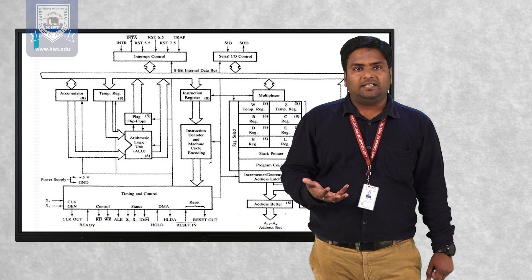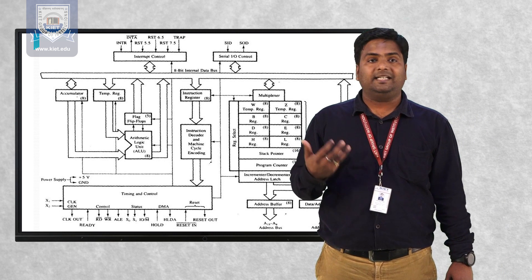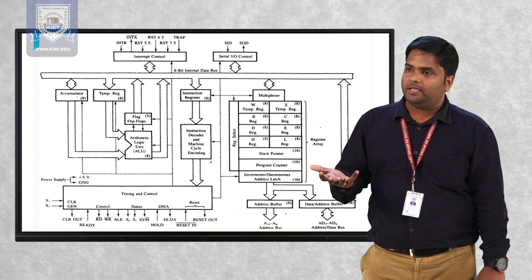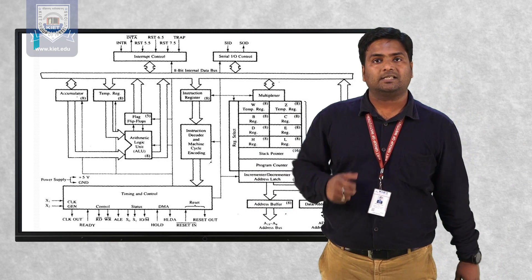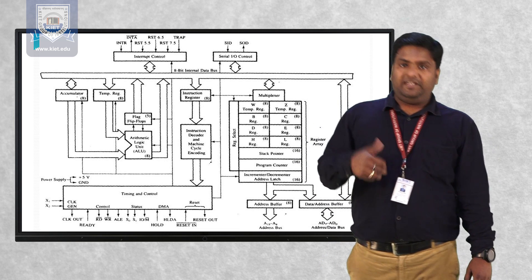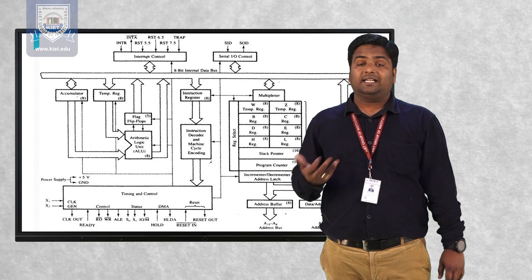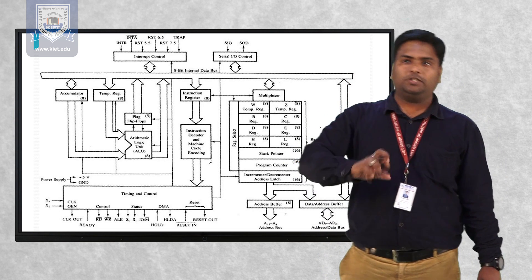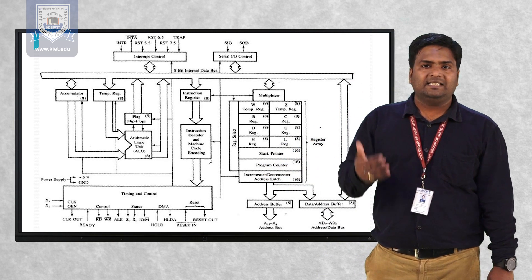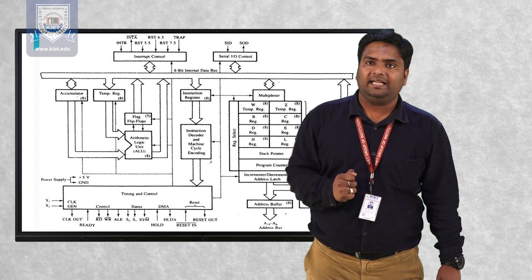We also have an accumulator register, which is a very basic register used by the 8085 microprocessor. If we want to perform an addition operation and store the result, we generally use the accumulator register. We also have an arithmetic and logic circuit (ALU), which performs arithmetic operations — addition, subtraction, multiplication, division — and logical operations such as AND, OR, and similar operations.